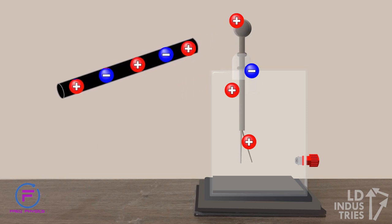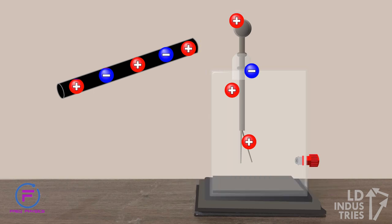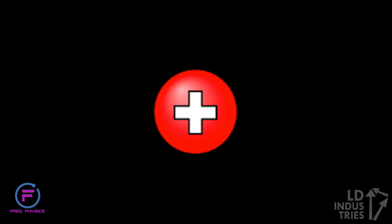This leaves fewer electrons in the electroscope, meaning that there are now more protons than electrons remaining, and the electroscope is net positive. The leaves deflect again due to the repulsion between the protons left in the leaves.